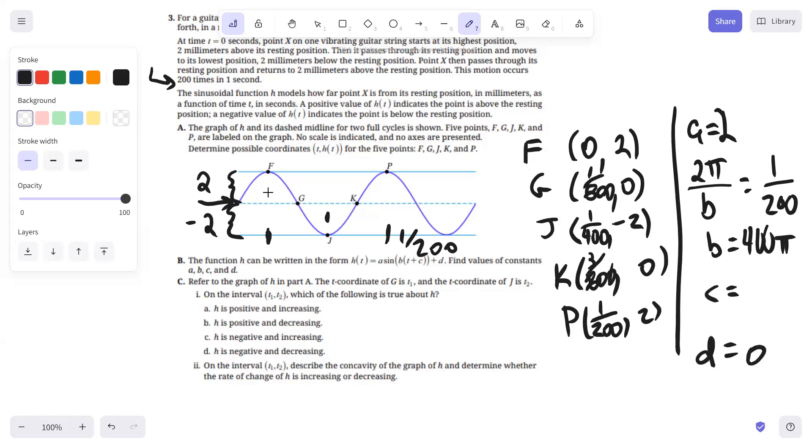So normally the sine function when T is zero, if it's just the basic sine function, is going to start at zero. But when T is zero here, we're at the max value. So basically it's like the sine function got shifted a quarter of a cycle to the left. So a cycle is one two hundredth, a quarter that's going to be one eight hundredth. So that's our value of C for that one.